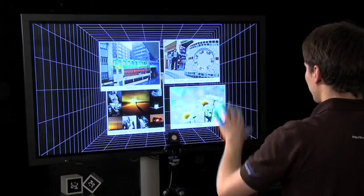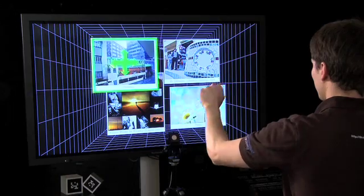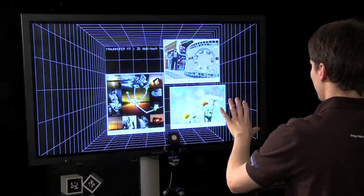The last gesture covered in this demonstration is the deletion of images. To remove an object, we simply grab it and move it out of the operation space.